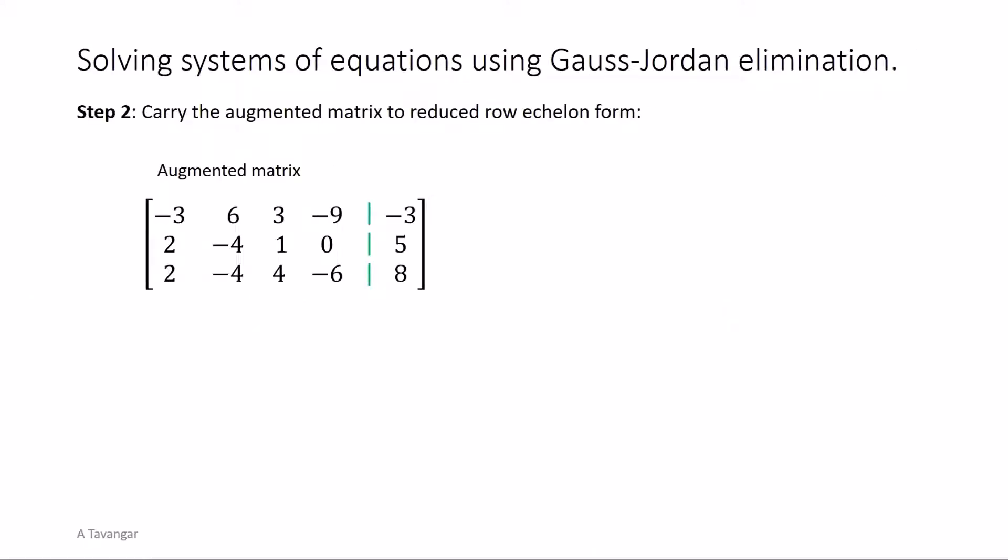Next through a systematic procedure of row operations we will simplify the augmented matrix and carry it to row echelon and reduced row echelon forms and find the solution of the system. Note that the elementary row operations used on an augmented matrix will not change the solution to the corresponding system of equations.